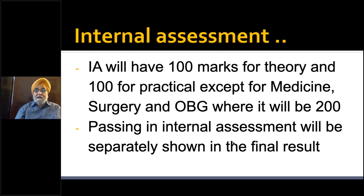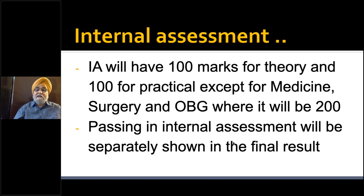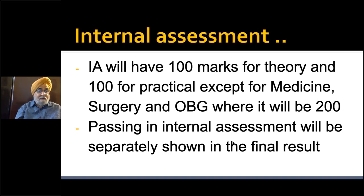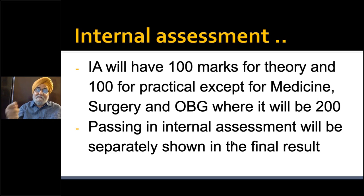Passing in internal assessment will be shown separately in the final results — internal assessment marks will not be added to university marks. This addresses the criticism that colleges inflate internal assessment marks to help students compensate for lower university exam scores. Students must now pass separately in university and in internal assessment. Internal assessment will be conducted out of 100 marks for theory and 100 for practical in every subject, except medicine, surgery, and OB-GYN, which run through three professional years and will be out of 200 marks, allowing for more discrimination.